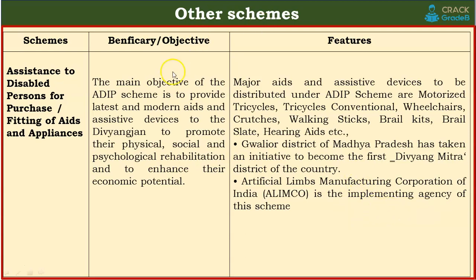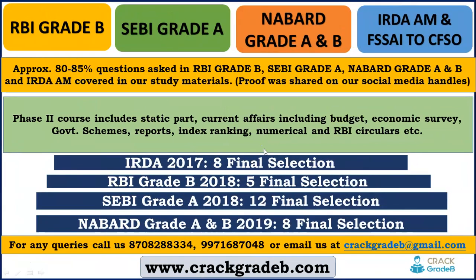ALIMCO is the PSU under the Ministry of Social Justice and is the implementing agency for the ADIP scheme. The devices will be manufactured by ALIMCO and distributed to eligible beneficiaries. So these were all the schemes currently in the news.